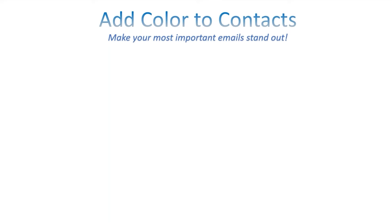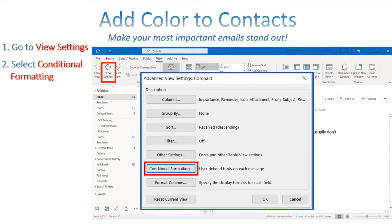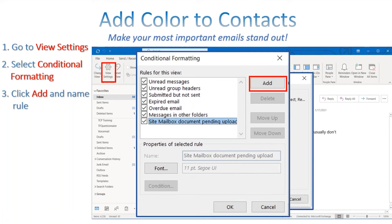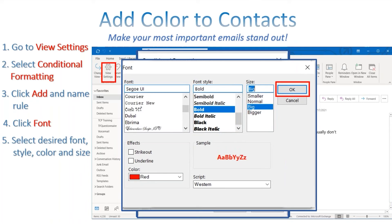Something else you can do is add color to your contacts so that when an important email comes in from an important person, it will stand out and you won't miss it. This is a bit more advanced. Go to the View tab, click View Settings, then go to Conditional Formatting and add a new rule. For example, create a rule called 'Peter Parker.' Go into Font to decide how his emails should look — I want them red, bold, and a bit bigger.